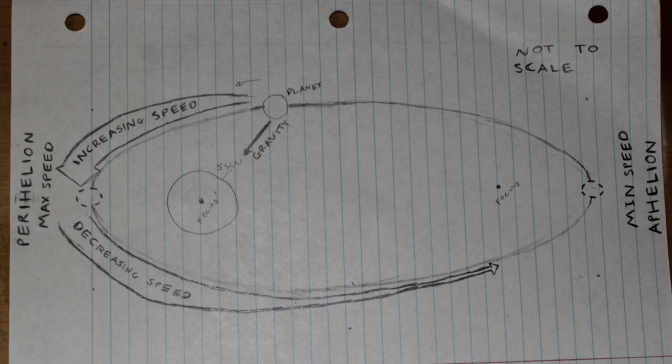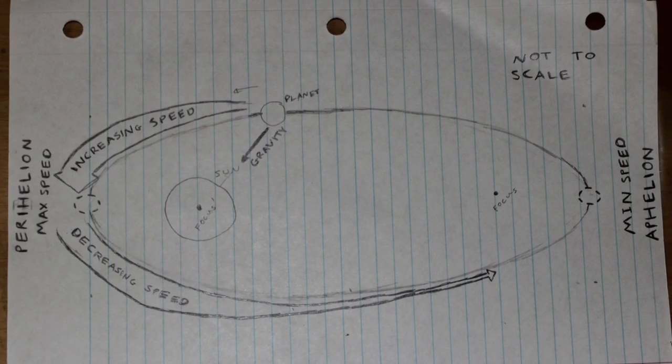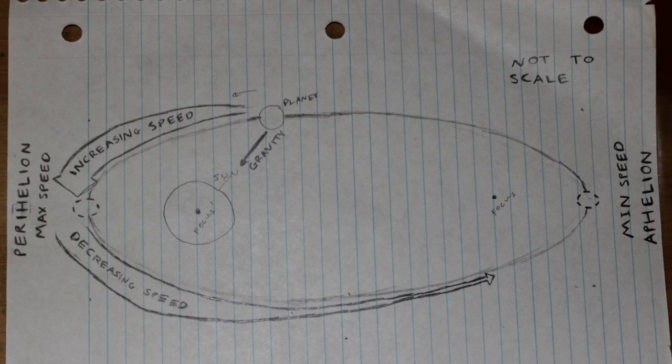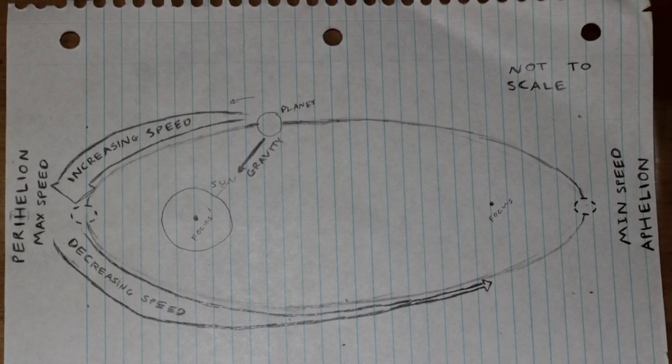The planet travels faster as it gets closer to the sun, and reaches max speed at perihelion, and it slows down the further it gets away from the sun, reaching its slowest point at aphelion.